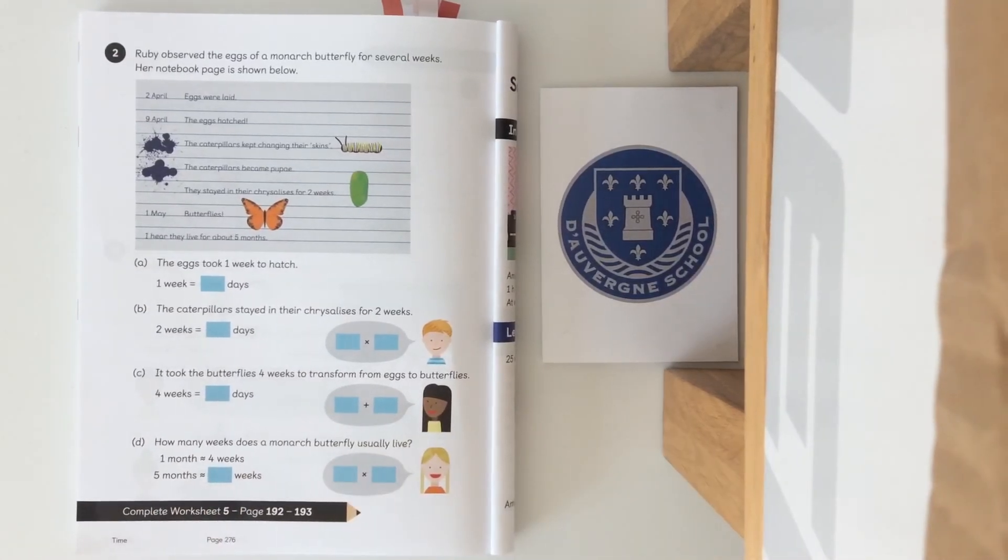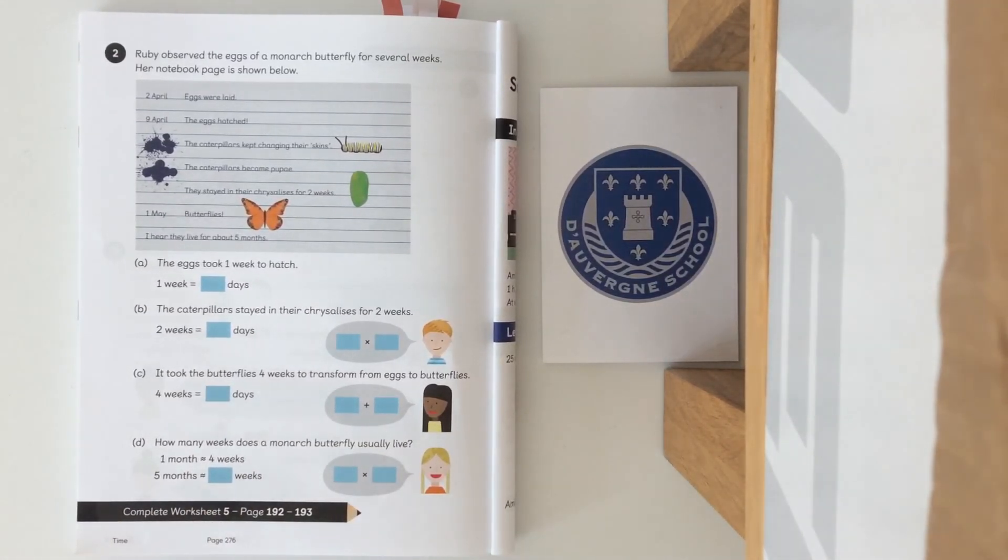Now I'd like you to have a go at completing worksheet five which is attached on our Google Classroom, page 192 and 193. You can access the textbook on the Maths No Problem website with your login. Any questions post it on our stream. Good luck everybody.